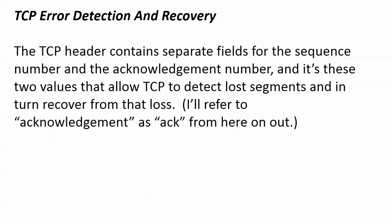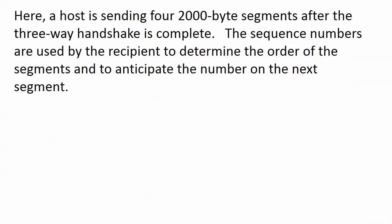About error detection and recovery — some books say this is not true error detection, but Cisco says it is, and it's their exam. The TCP header has two fields: one for the sequence number and one for the acknowledgement number. It's these two values that allow TCP to detect lost segments and recover from that loss.